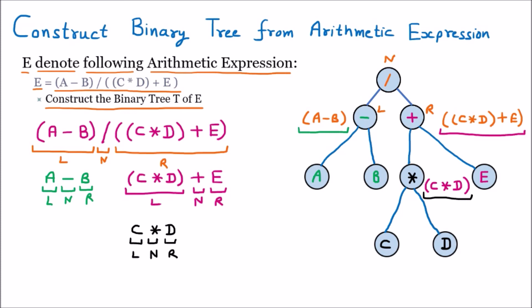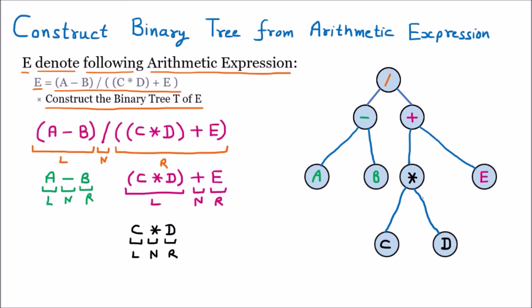This is the final binary tree constructed from the arithmetic expression. When constructing a binary tree from an arithmetic expression, note that we should divide the expression into three parts corresponding to parent, left child, and right child. The middle element is always the parent in infix notation, the left part is the left child, and the right part is the right child. Following this procedure, we can easily construct any binary tree from an arithmetic expression.